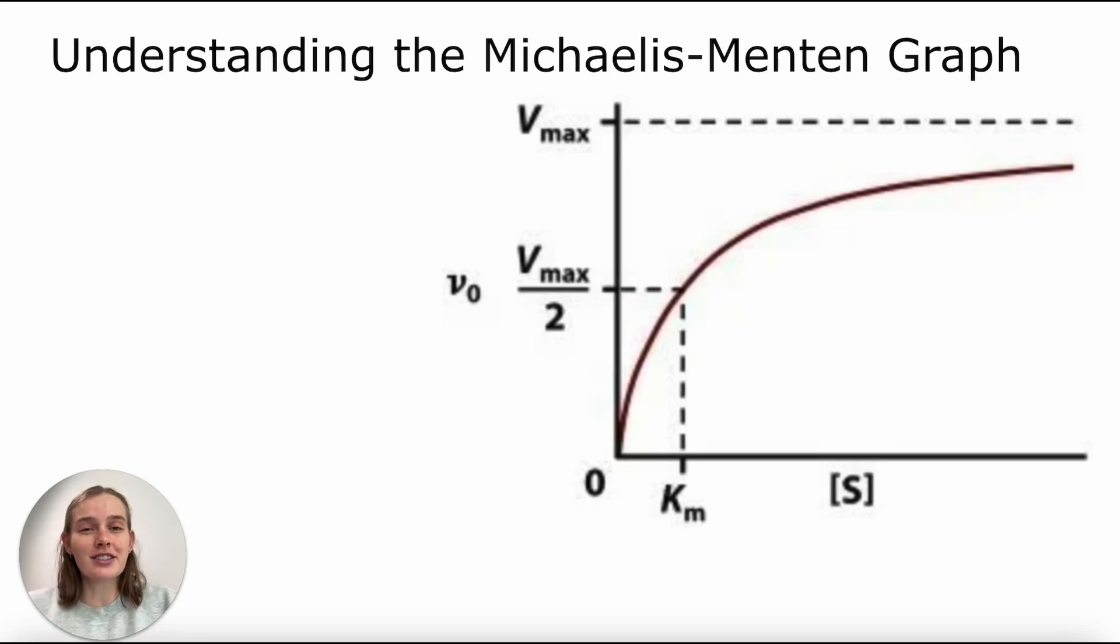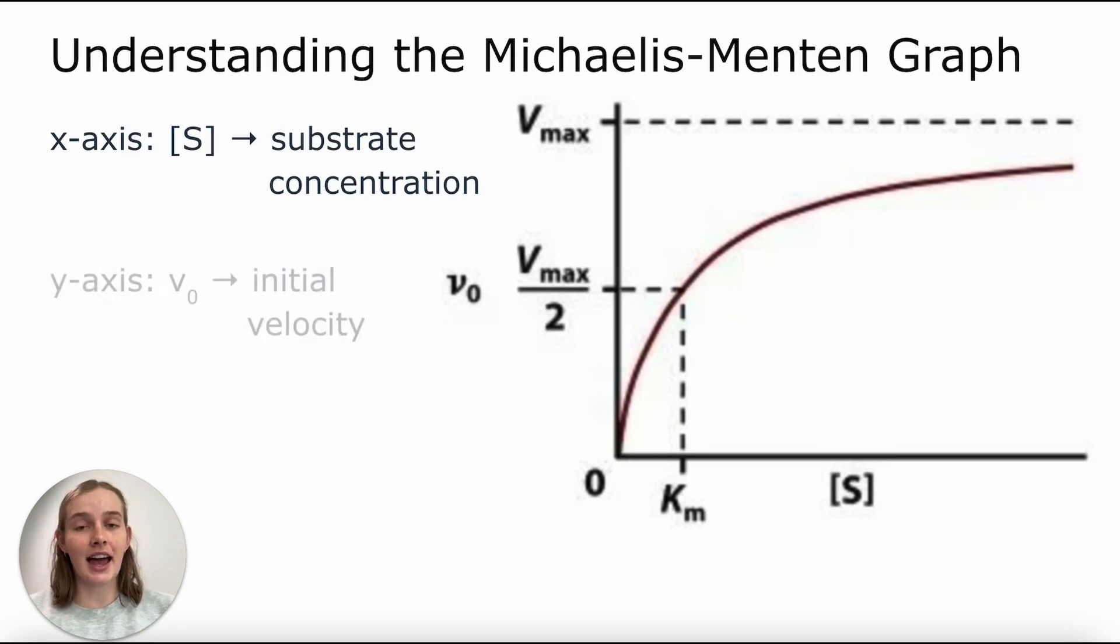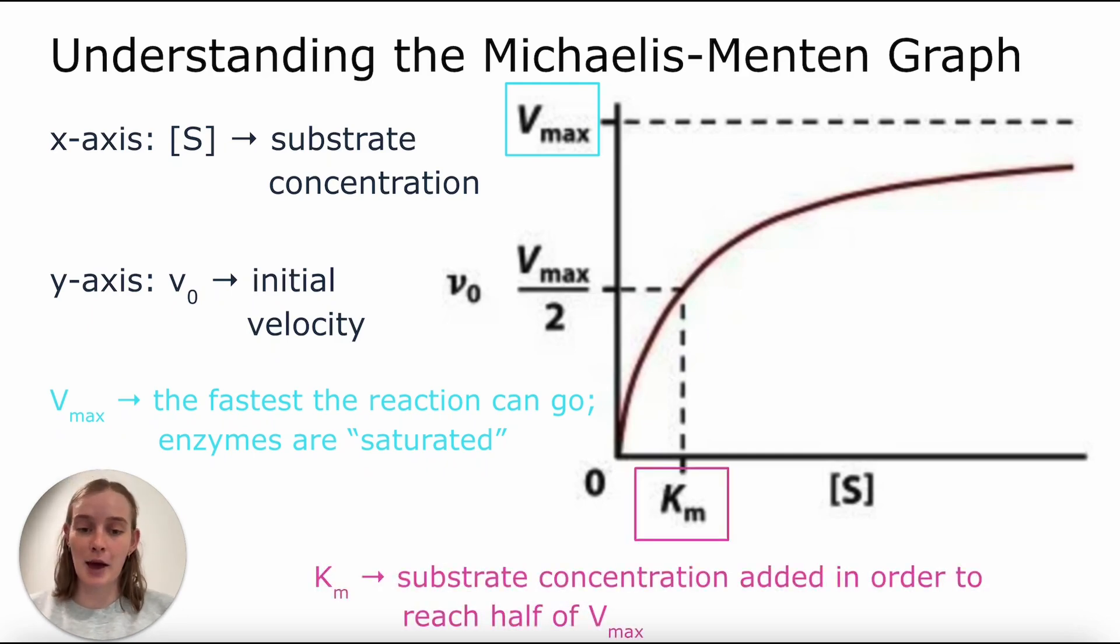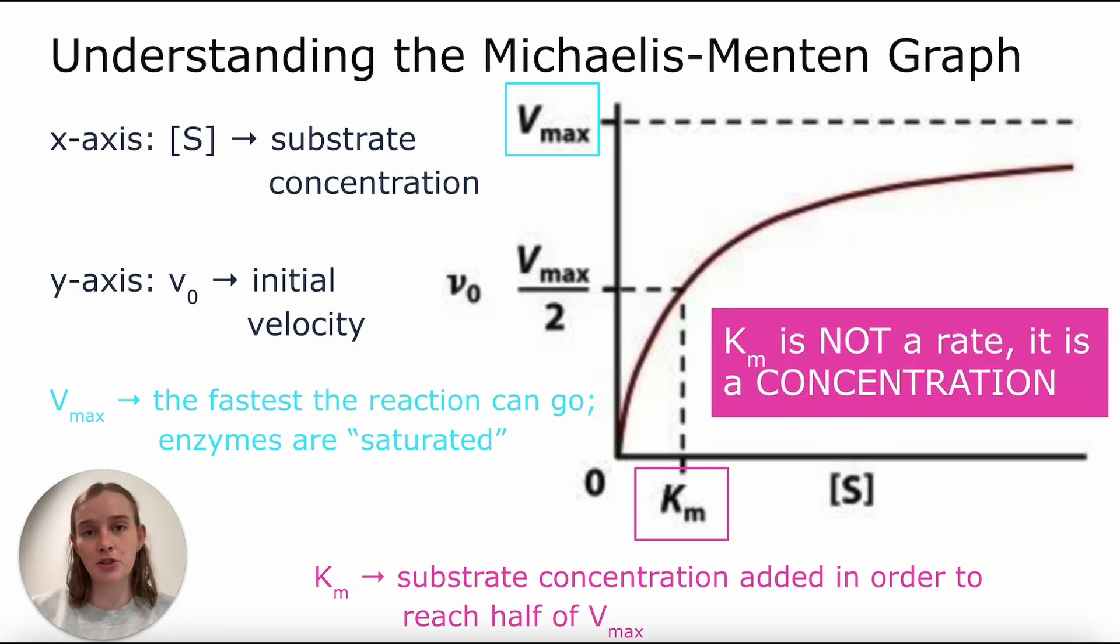To get started, we want to understand what is being shown to us in the Michaelis-Menten graph, which you may see throughout your MCAT prep and potentially even on exam day. To start off, we're going to look at our two axes, the x-axis, which is showing us substrate concentration, and the y-axis, which shows us the initial velocity of the reaction. Two other important parameters to think about and know are Vmax, which tells us how fast the reaction can go at its maximum. So this is when enzymes are what we call saturated, or essentially no other substrate can bind to the enzyme because it is binding and reacting as quickly as it can. The second parameter that we need to keep our eye on is Km, which is the substrate concentration added in order to reach half of Vmax. Now, it's really important to note that Km is not a rate. It is a concentration of substrate.